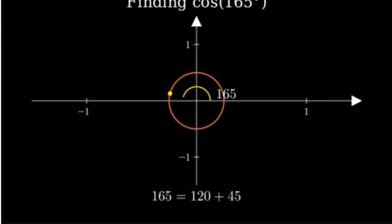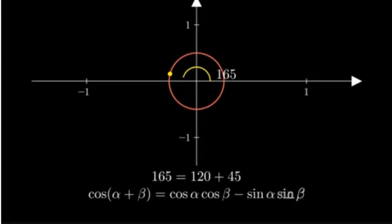To find the cosine of a sum, we can use the cosine addition formula. The formula states that cosine of alpha plus beta equals cosine of alpha times cosine of beta minus sine of alpha times sine of beta. Let's apply this formula to our problem.